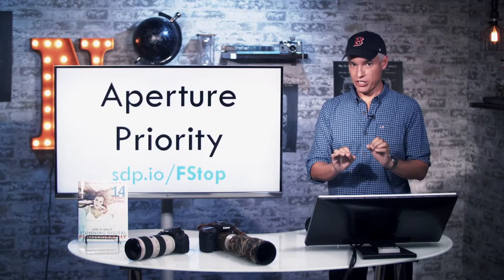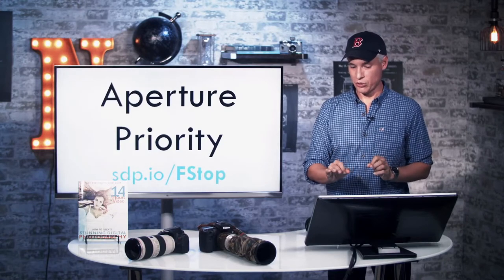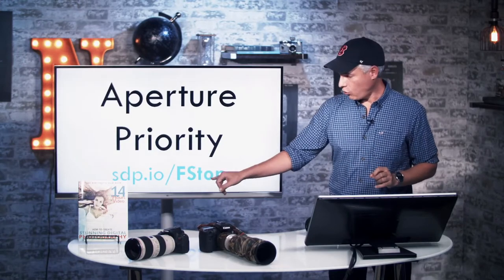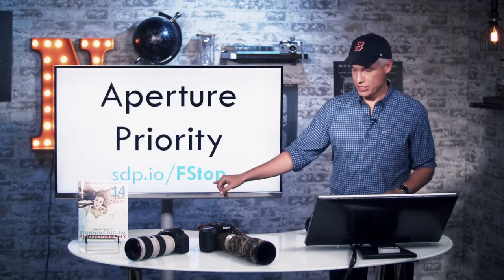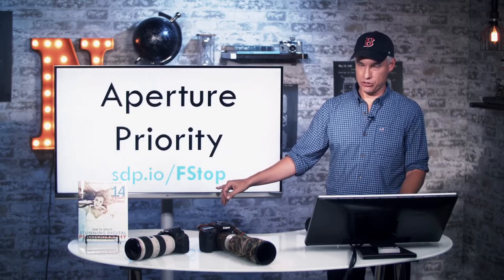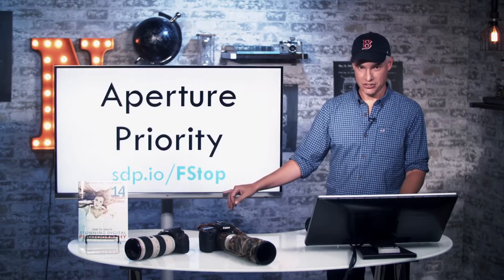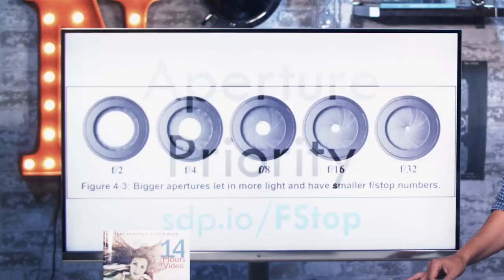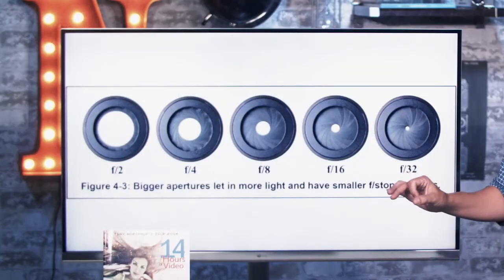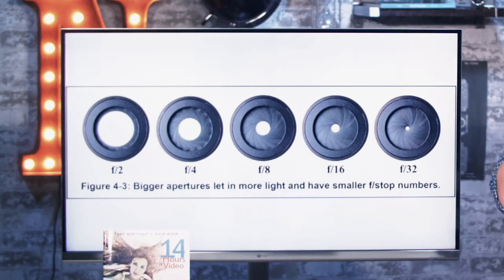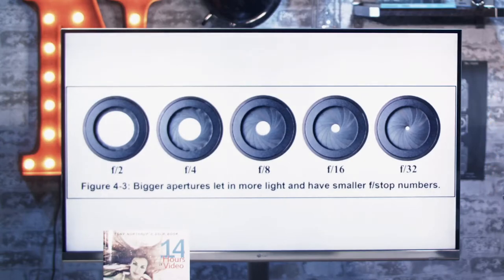If you have no idea what aperture is, I'll give you a brief overview, but I have a whole free video at sdp.io/f-stop which goes into intense detail. The aperture describes the iris of the lens and how open it is. It's just like the iris of your eye, which opens in dim lighting or closes in bright light so you don't blind yourself.